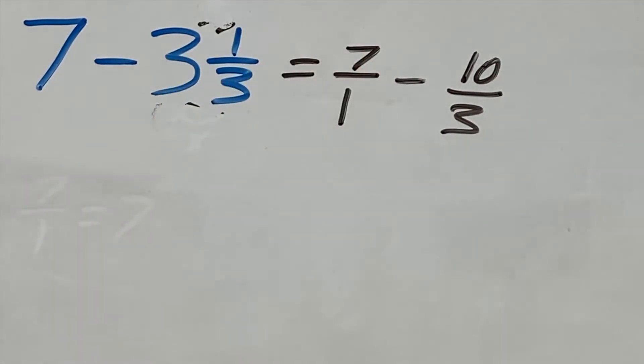Next, we can solve this subtraction problem. We have 7 over 1 minus 10 over 3.